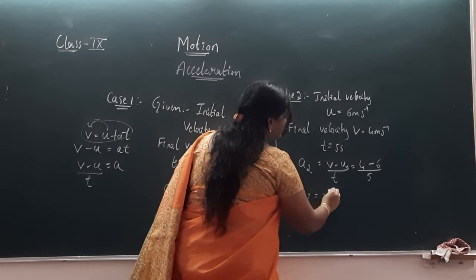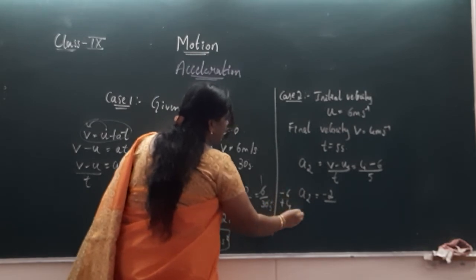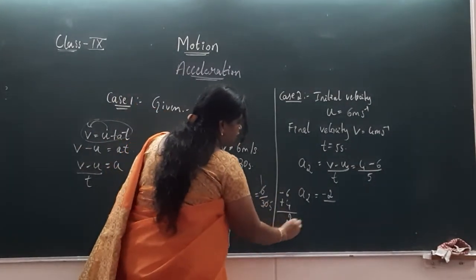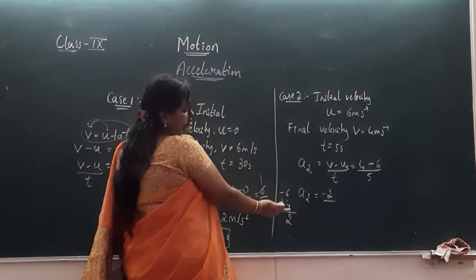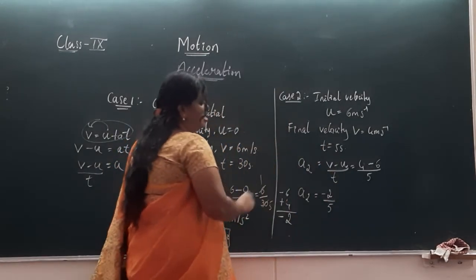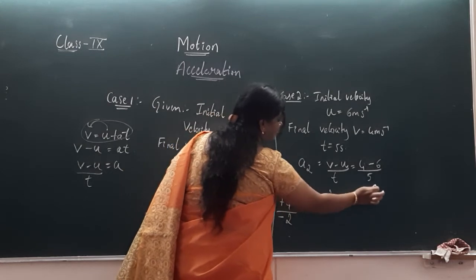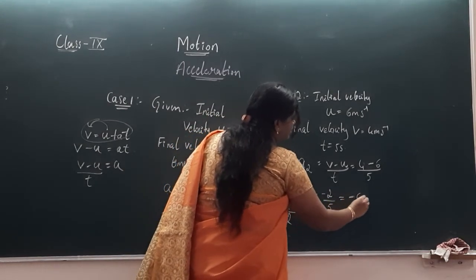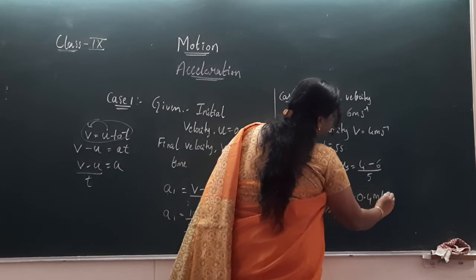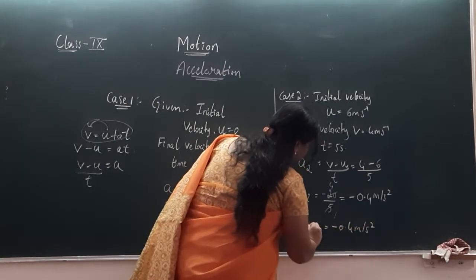So a2 is 4 minus 6 divided by 5. 4 minus 6 is minus 2. Since 6 is greater and carries the minus sign, the result is minus 2. Minus 2 divided by 5 equals minus 0.4. So a2 is minus 0.4 meter per second square. This is the value of acceleration in the second case.